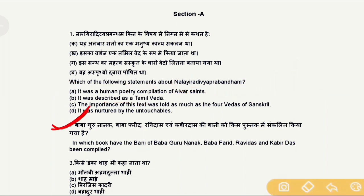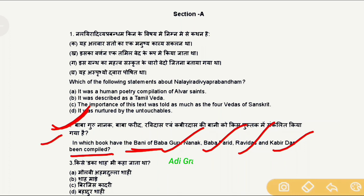Question 2: In which book have the compositions of Baba Guru Nanak, Baba Farid, Ravidas, and Kabir Das been compiled? The correct answer is the Adi Granth Sahib.